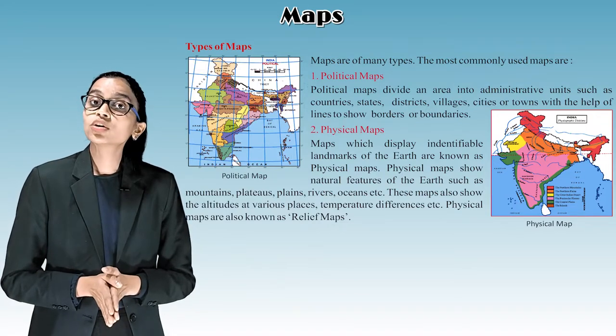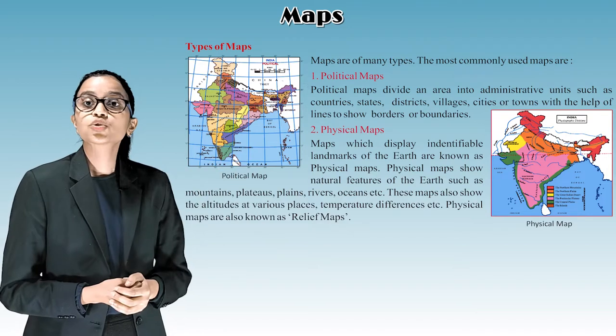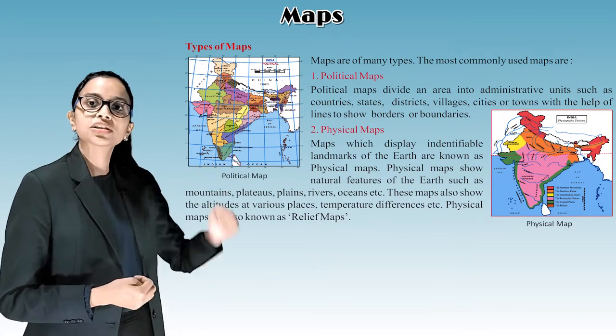If we summarize it, the political map of India shows these states and its capital and small cities and villages. So we are moving towards the second type of map, that is a physical map. So children, are you able to see the physical map?